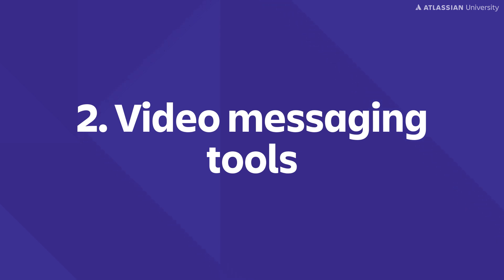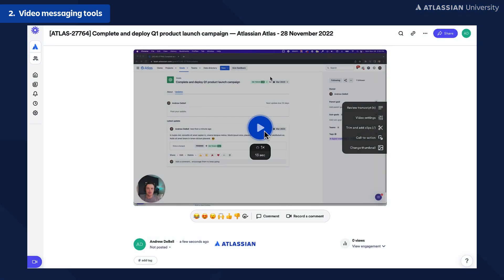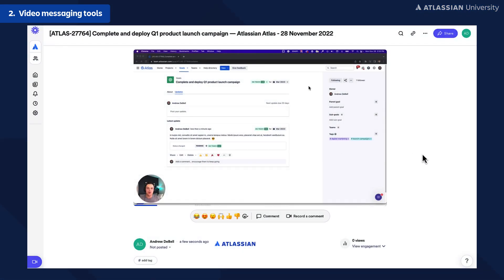Let's talk video messaging tools. Tools like Loom or Zoom are great for async collaboration and can actually help reduce meetings by 29%. These tools allow you to record short videos around specific context and then seek feedback from colleagues. Maybe you want to walk somebody through a document you just put together — simply record that five-minute video, send it out to the group, and say 'could you send me your feedback in 24 hours?'